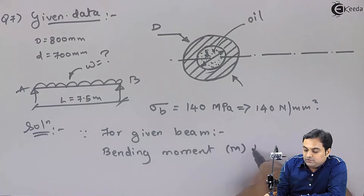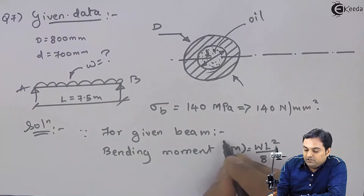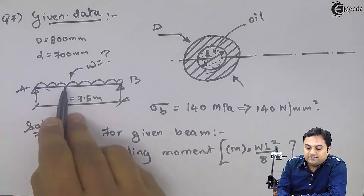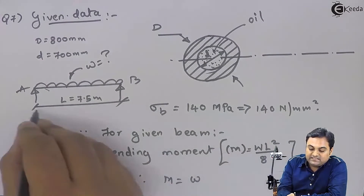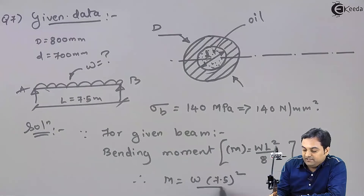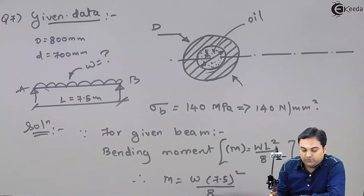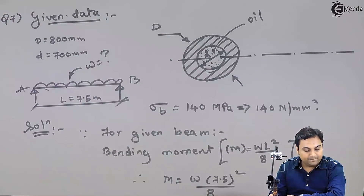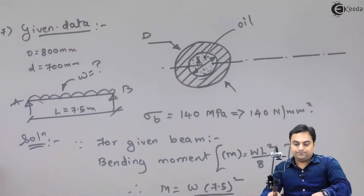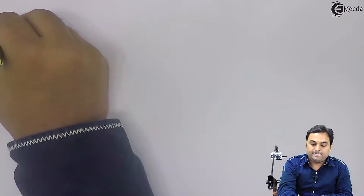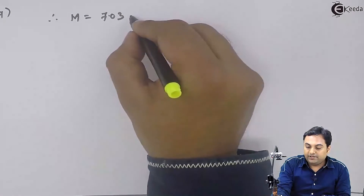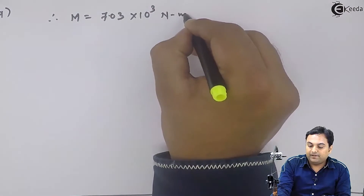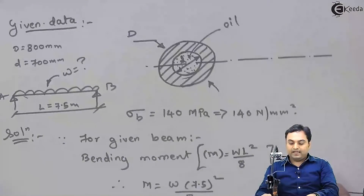Since for the given beam, the bending moment M = wL²/8. Therefore, M = w × (7.5)² / 8. Calculating 7.5 squared divided by 8 gives 7.03. So M = 7.03 × 10³ × w Newton·mm. This is our expression for M in terms of the unknown UDL w.